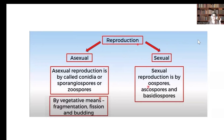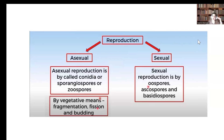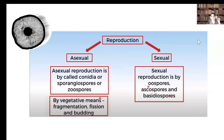Fungi show both asexual and sexual reproduction. Asexual reproduction occurs mainly by formation of conidia, sporangiophores, or geospores, and also by fission, budding, and fragmentation. Sexual reproduction is by formation of oospores, ascospores, and basidiospores.